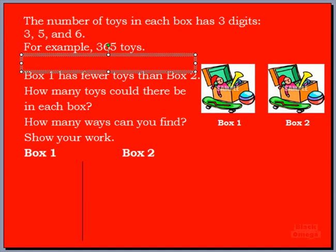What I would suggest first, boys and girls, is to figure out how many numbers we can make with a 3, a 5, and a 6. Once you have that down and you've put all those numbers there, you can use those numbers and you'll answer the questions below much, much easier. So if each box has toys and we can only use three digits, what numbers can we make?